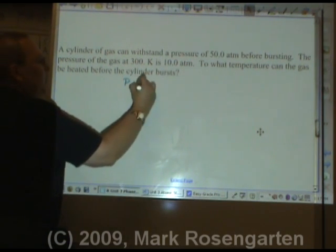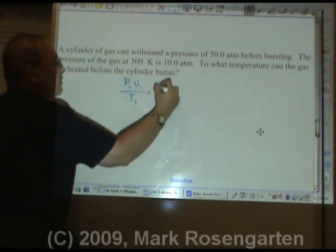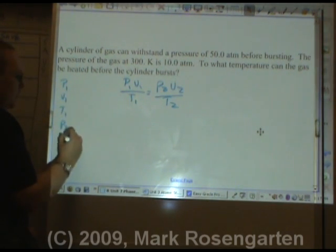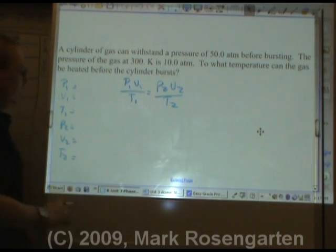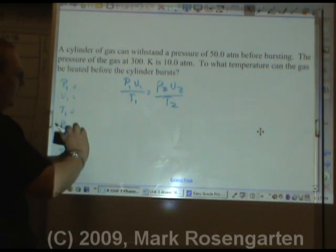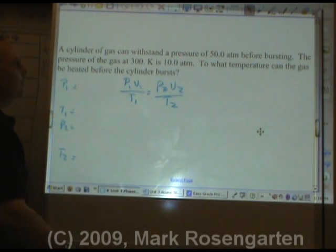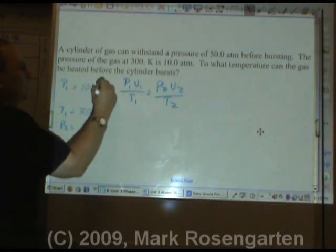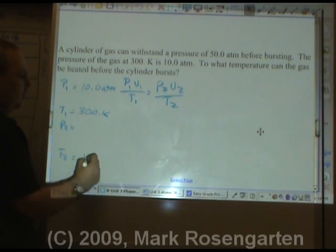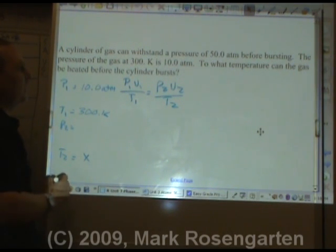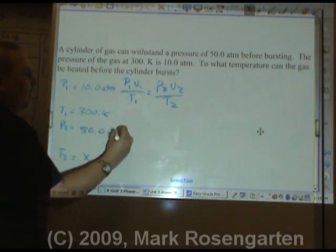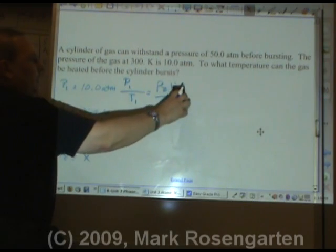So again, P1 V1 over T1 equals P2 V2 over T2. A cylinder of gas — we can get rid of volume because volume is fixed — can withstand a pressure of 50 atmospheres before bursting. The pressure of the gas at 300 kelvin is 10.0 atm. To what temperature can the gas be heated before the cylinder bursts? So P2 is 50.0 atm. Volume is constant, so we ignore it.